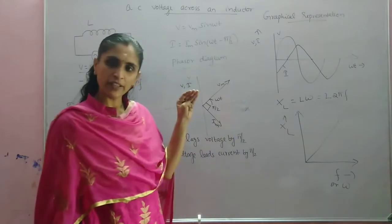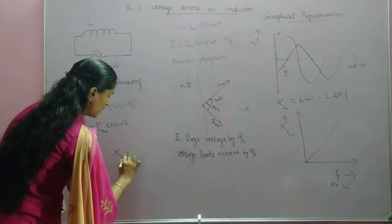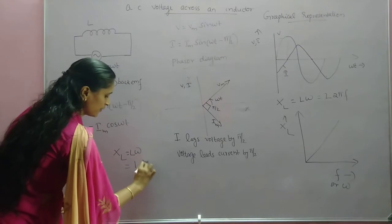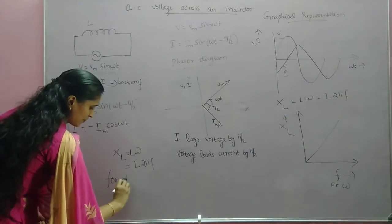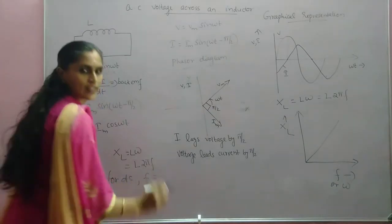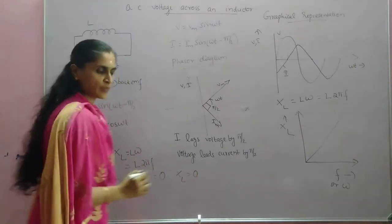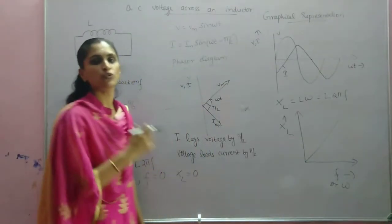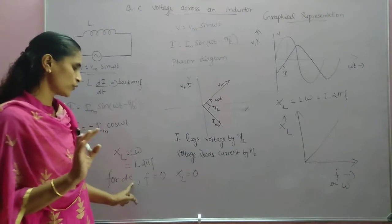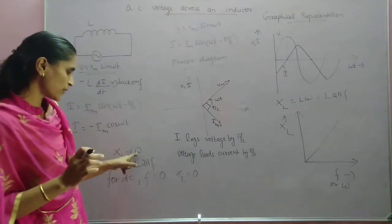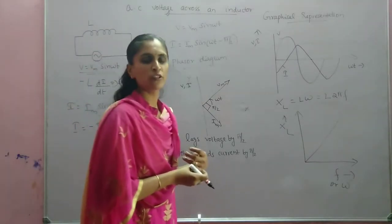For DC, the frequency is zero, so XL equals L times 2π times 0 equals zero. This means an ideal inductor will allow DC current to pass through it very smoothly — there is no opposition at all for an ideal inductor with DC.